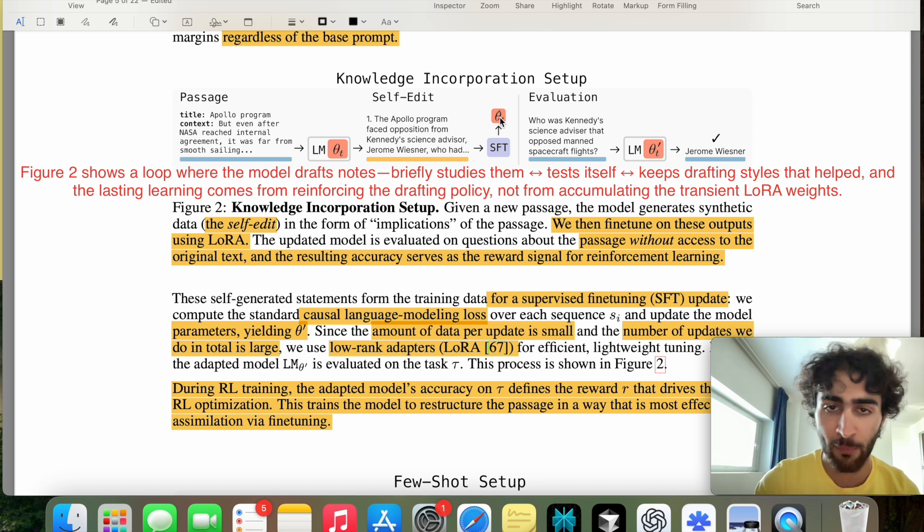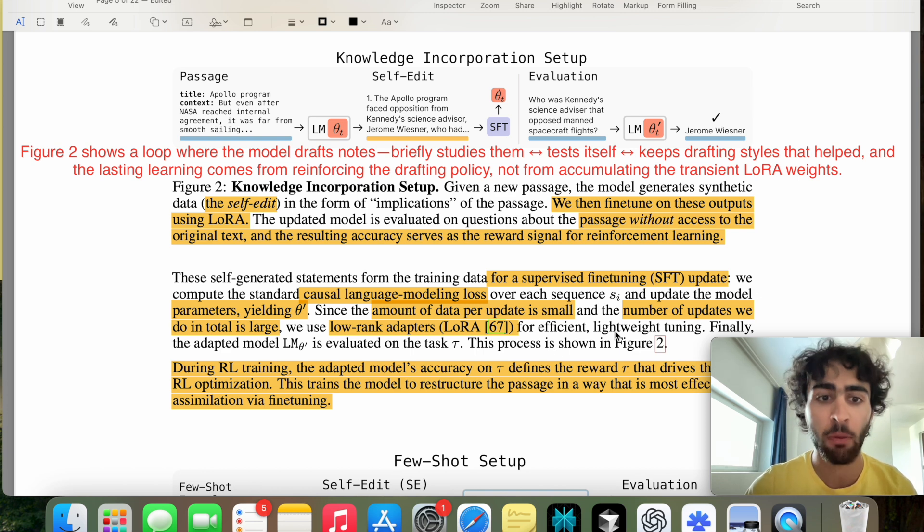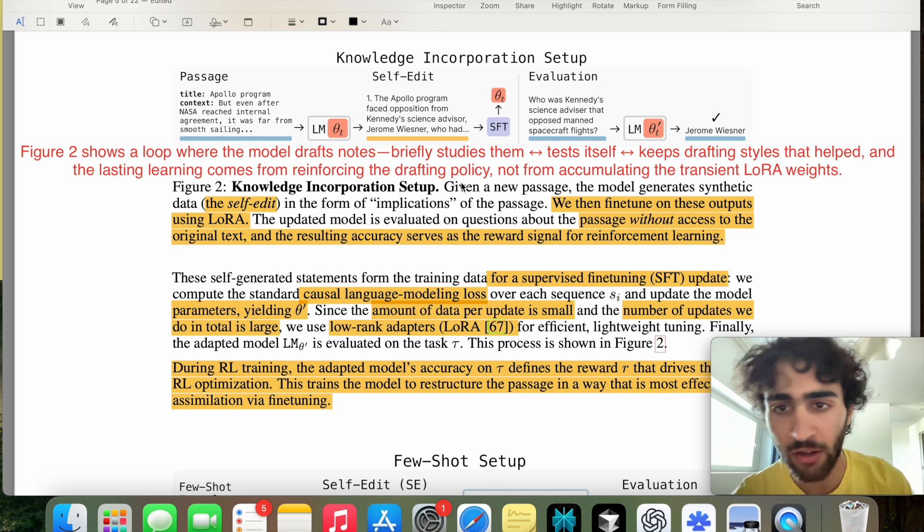And not from accumulating the transient LoRa weight. So this was my misunderstanding. I thought that these weights are actually kept if the reward is one. But no, this is in fact, just a way to test if the self-edit was successful. So this weight, because they use LoRa, which they mentioned is efficient and lightweight, it's possible to just discard it. And even though it's still less computationally efficient as other methods using reinforcement learning, it's still very feasible. And also, they only had a 1 billion parameter model.